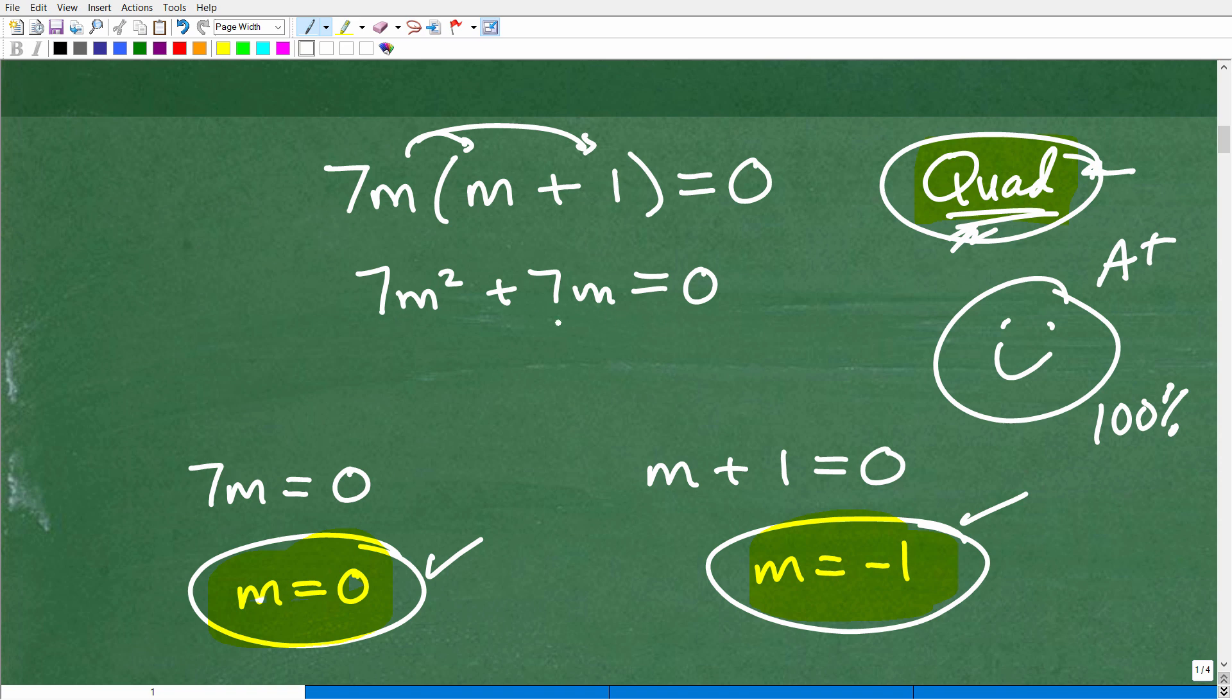So, if I gave you the problem this way, what would be your first move? Well, your first move would be to try to factor. And, of course, the problem is already factored right here for us. So, when something's factored, it's super easy to do because all we need to do is take the factors and set them equal to zero. So, I got 7M is equal to zero and M plus one is equal to zero.